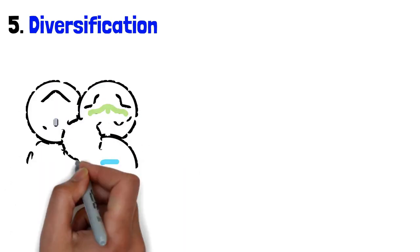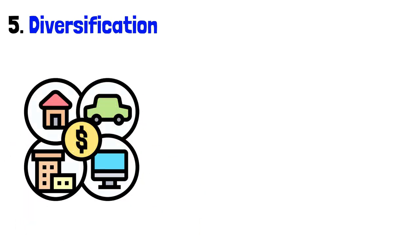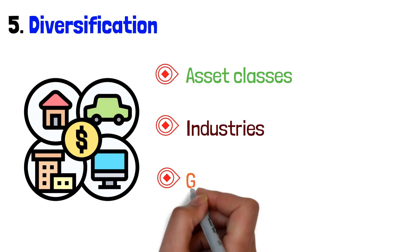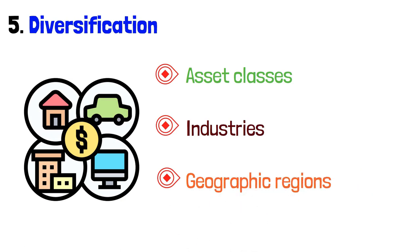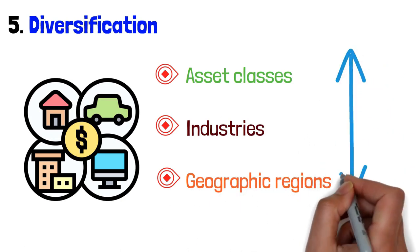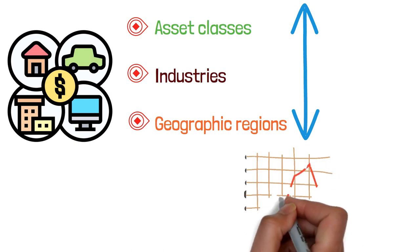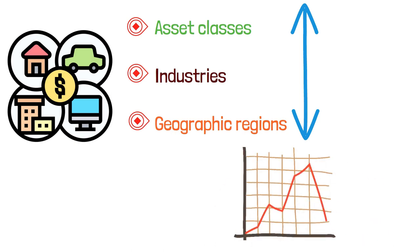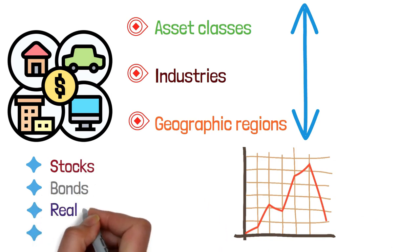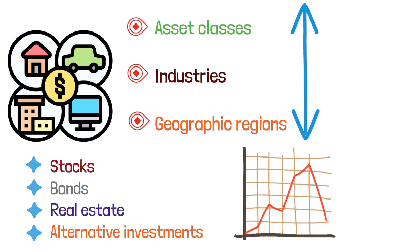Number five: diversification. Diversify your investment portfolio across a range of asset classes, industries and geographic regions. Diversification helps spread risk and reduce the impact of any individual investment's underperformance. Consider allocating your portfolio across stocks, bonds, real estate and alternative investments to create a well-balanced and resilient investment portfolio.